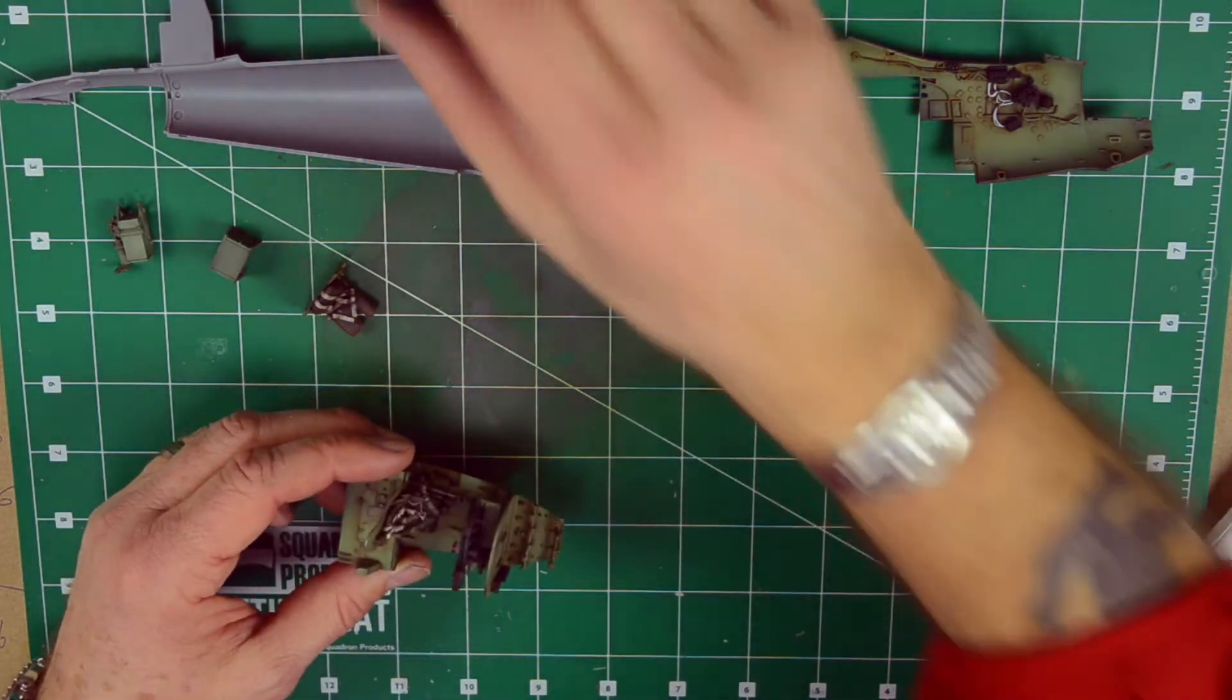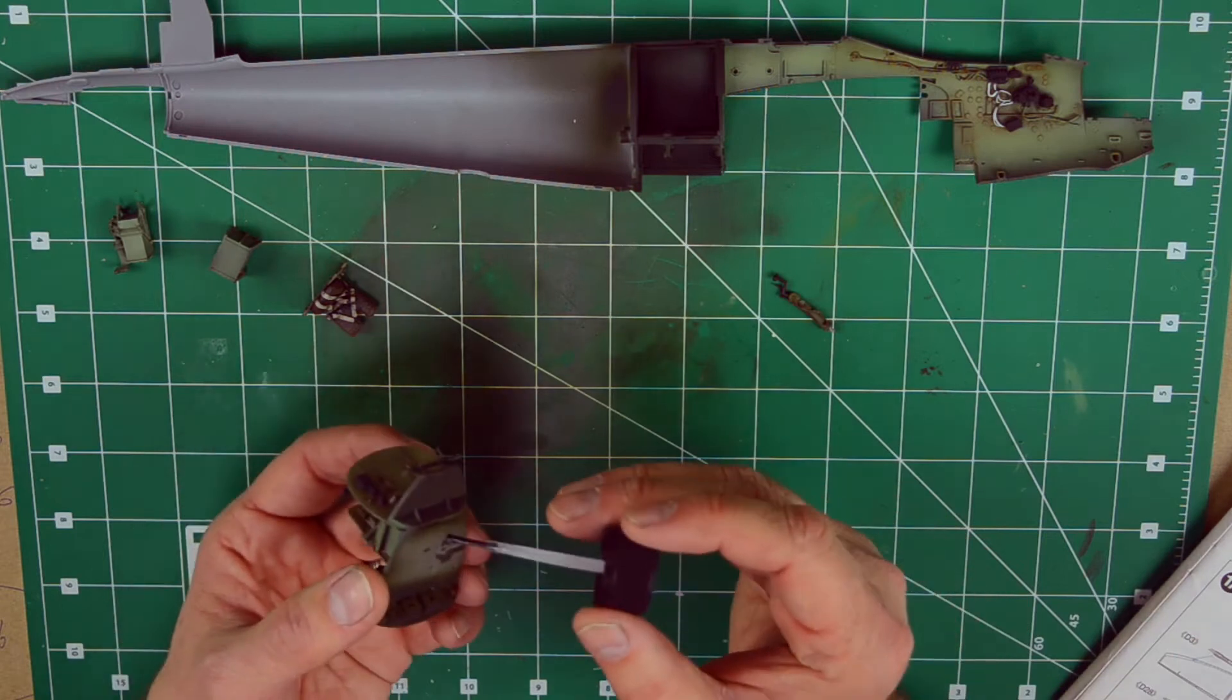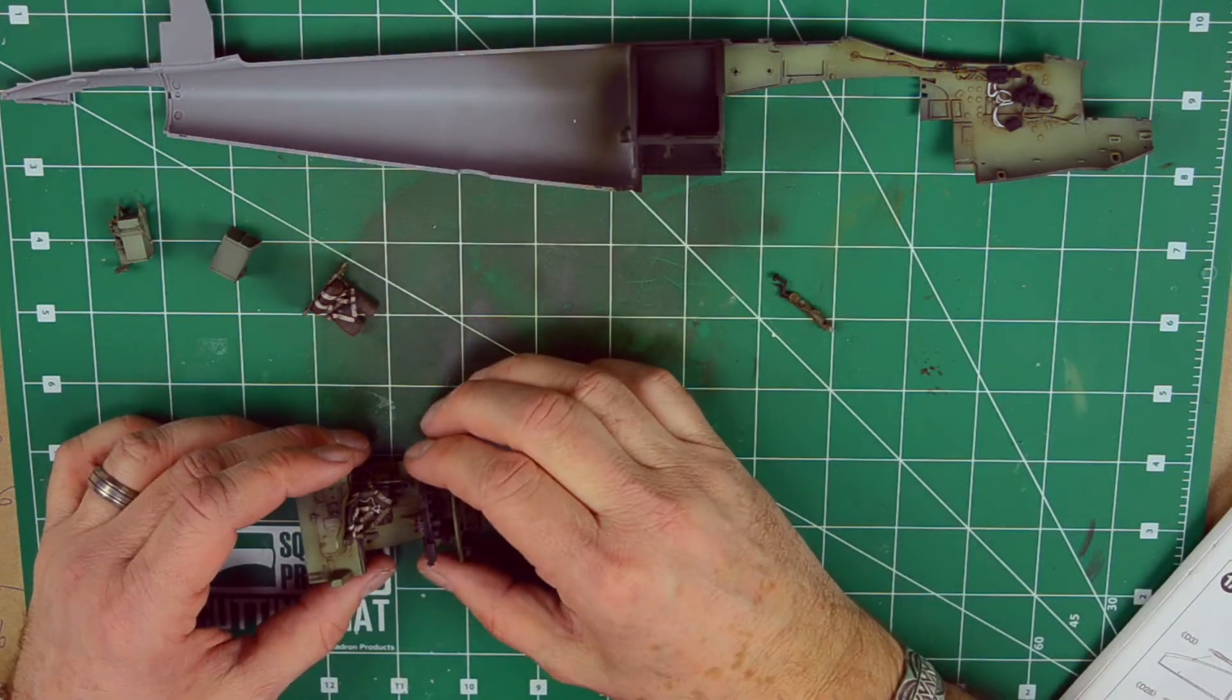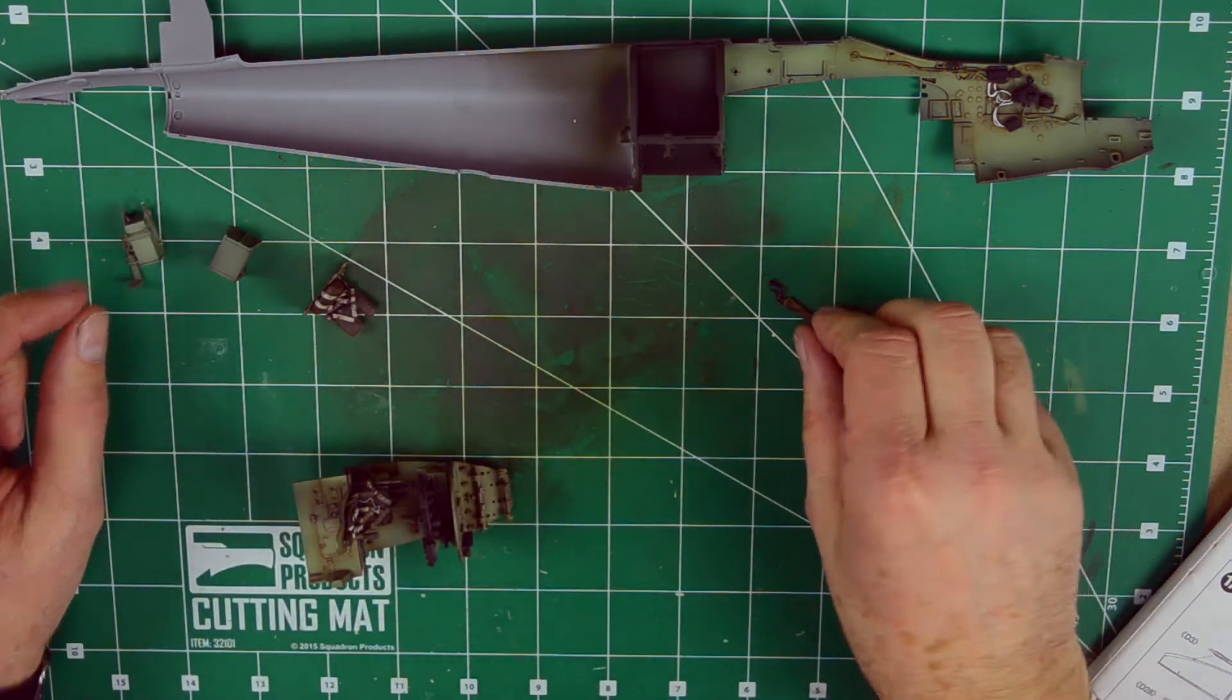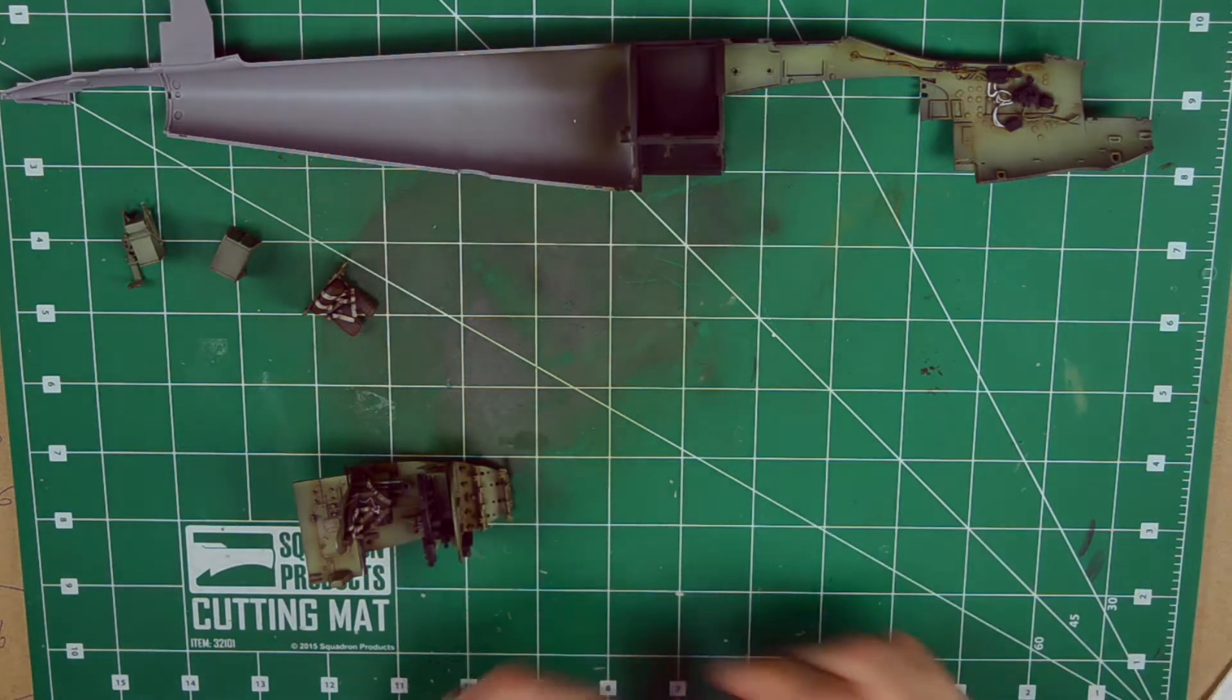I actually decided not to mount the guns because I don't want to show the guns. I skipped that step. I don't want to open up the gun bay anyways. I'm just going to skip that step and glue the barrels of the gun straight into the nose cone.